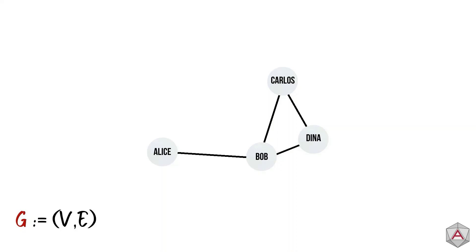Mathematically, graphs are represented by the notation G is defined by V, E, where V is the vertices and E the edges. This notation is important as it will show up in future videos explaining different graph algorithms.